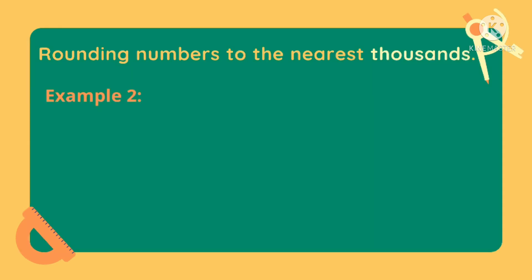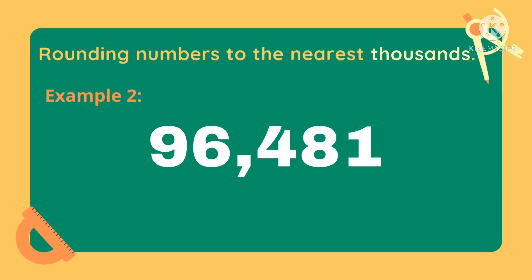Let's have another example. Let's try to round off 96,481 to the nearest thousand. To round off this number to the nearest thousand, we need to determine which digit is in the thousands place.